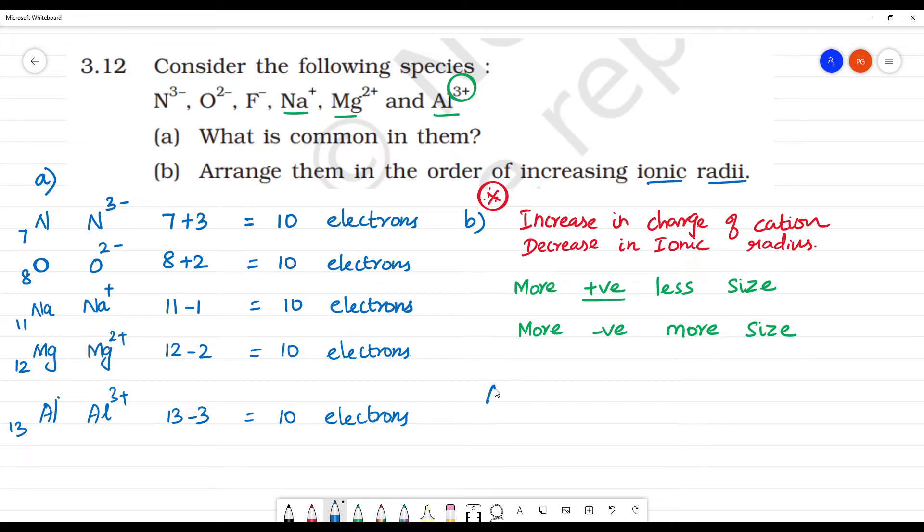Where is ionic radius very small? Al³⁺ has the smallest size, then Mg²⁺ has more ionic radius. In the negative ions, more negative means bigger size.